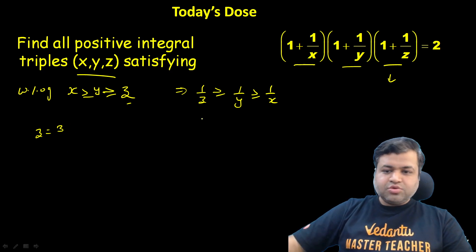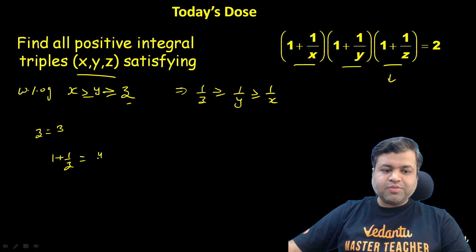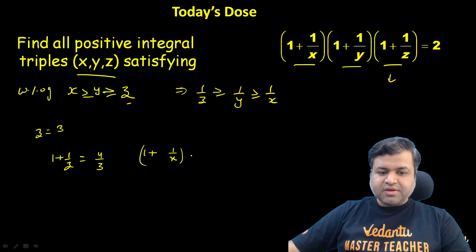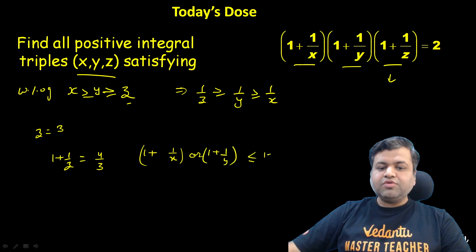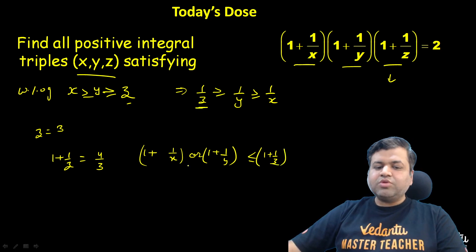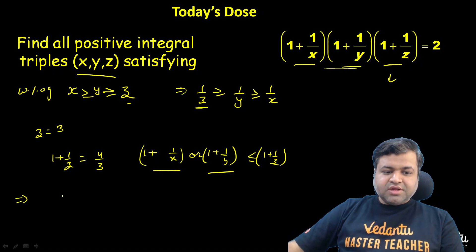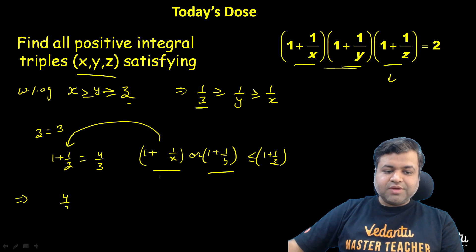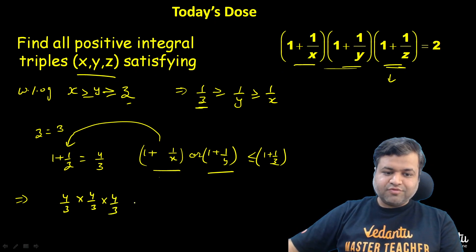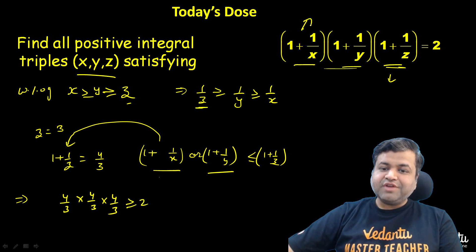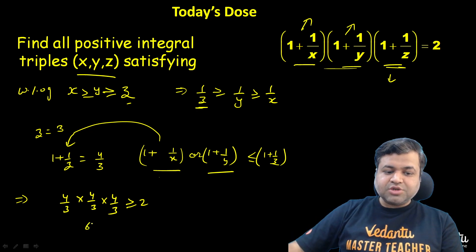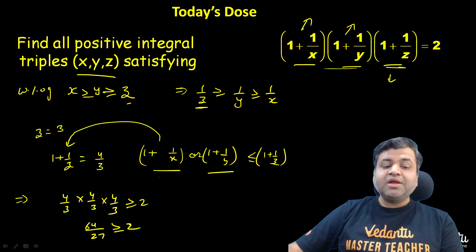For example, let's put z = 3. Then 1 + 1/z = 4/3. We can say that (1 + 1/x) and (1 + 1/y) are both less than or equal to (1 + 1/z), since 1/z is the largest. So the product (1 + 1/x)(1 + 1/y)(1 + 1/z) is at most (4/3)³ = 64/27. And our equation requires this product to be greater than or equal to 2. Since 64/27 > 2, z = 3 is still feasible.